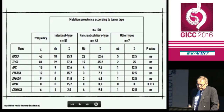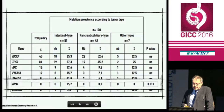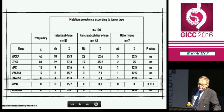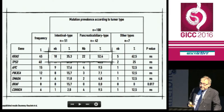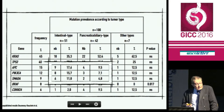When we looked for differences between intestinal type and pancreaticobiliary type, we found a significant difference in terms of frequency of mutation for BRAF: 50% of the intestinal type were mutated for BRAF, as compared to 0% in the pancreaticobiliary type. On the contrary, there is a non-significant increase in frequency of KRAS mutation in the pancreaticobiliary type, with 52% versus 35% in the intestinal type. There is also a non-significant increase of APC, PI3-kinase, and SMAD4 in the intestinal type.